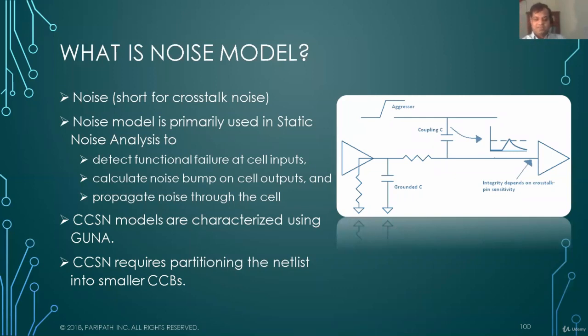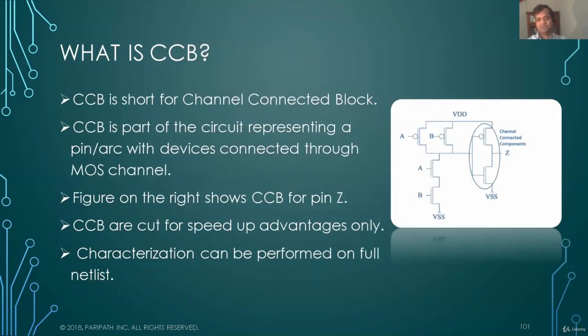CCS noise models are characterized using GUNA. The one additional thing in CCS noise models is that it requires partitioning the netlist into smaller CCBs. So what are CCBs? CCBs are channel connected blocks. Essentially, your transistors connected at the pins, close to the pin, so that it completes the channel. So that's part of CCBs. And CCBs are used for noise characterization.